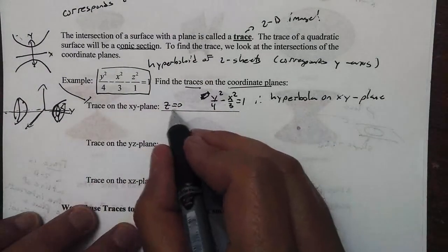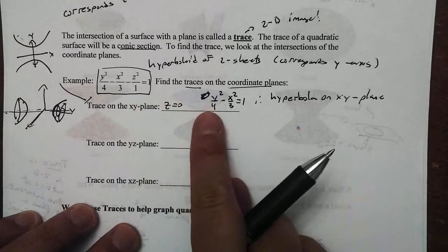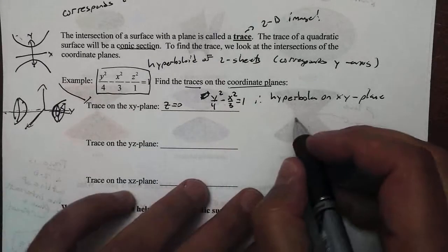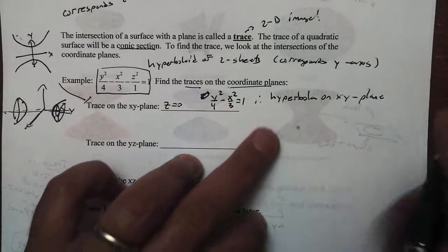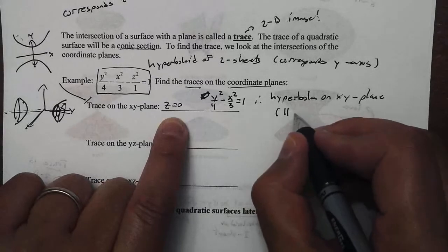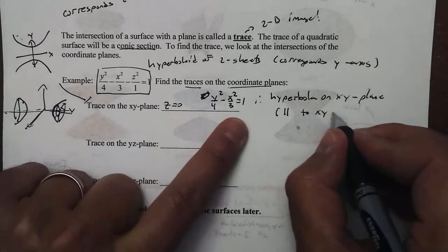Now, what if I let z be 1? Well, if I let z be 1, I'm going to get y squared over 4 minus x squared over 3 equals 2. So it's also going to be hyperbola, but basically, anytime we let z be anything, we're always going to get a hyperbola parallel to the xy plane as well.